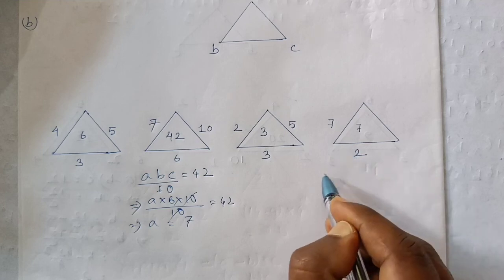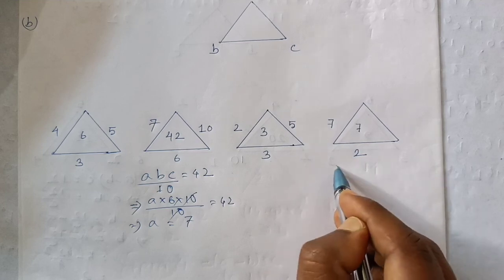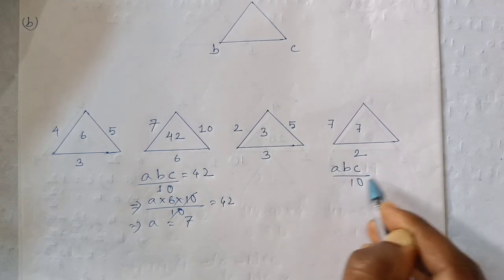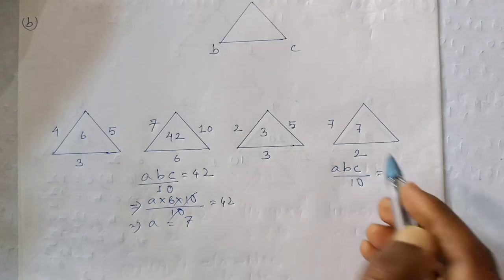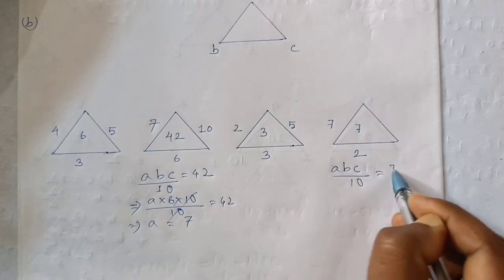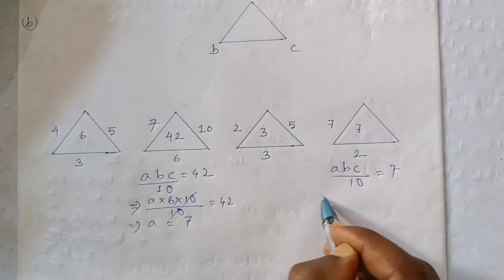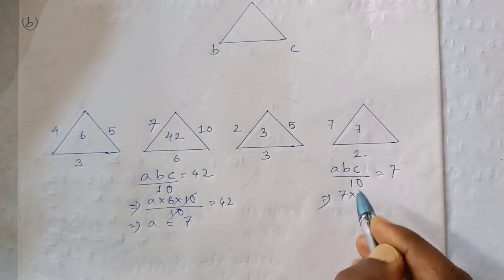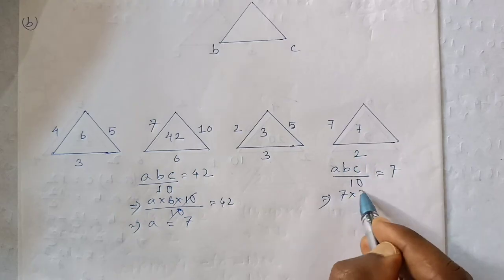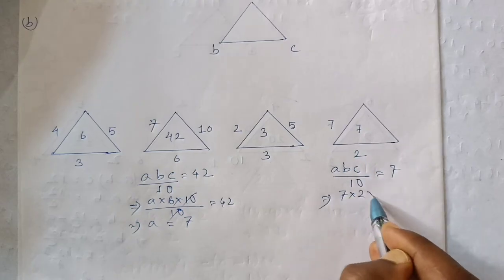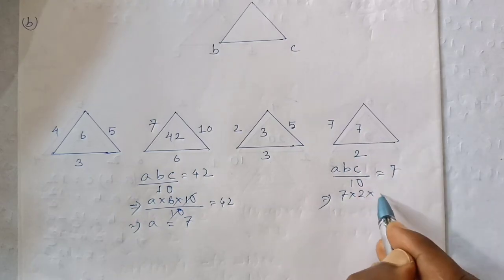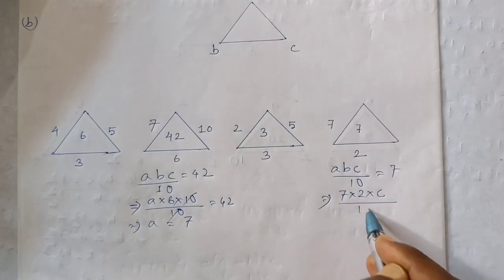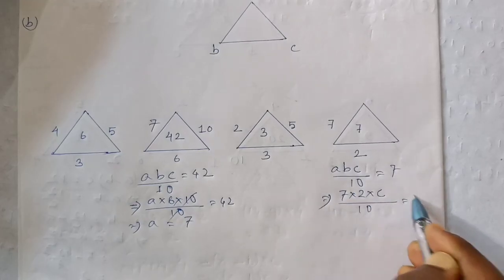We will write, if we write, we will write about A, B, C divided by 10, equal to A dash of 7. This implies C equal to P and A, P and B, P and A. And C equals 7.